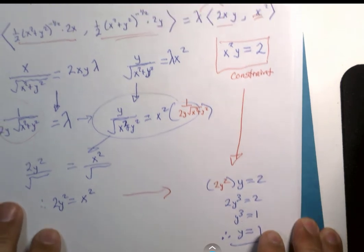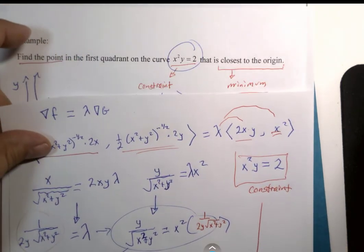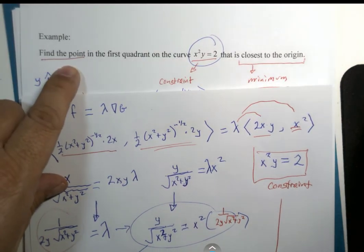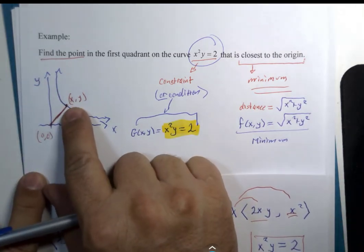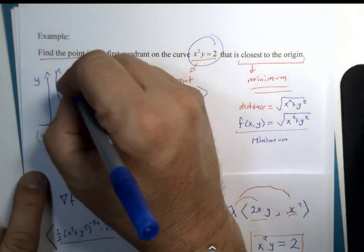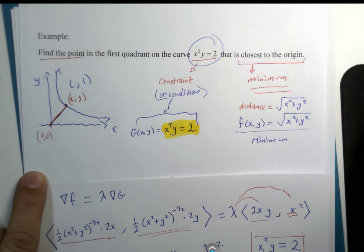We did not answer the question, which was find the point on the graph of this curve right there where it's closest to the origin. We just discovered that the y-coordinate is 1. How do we find the x value?